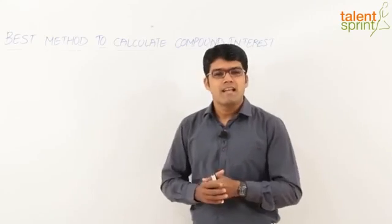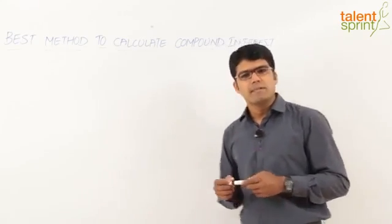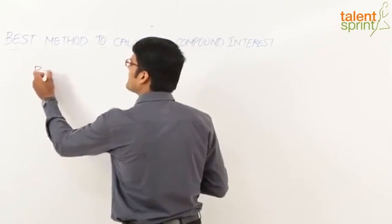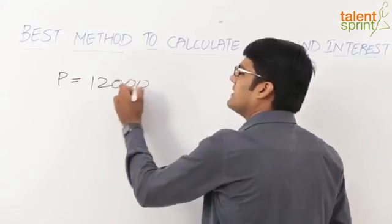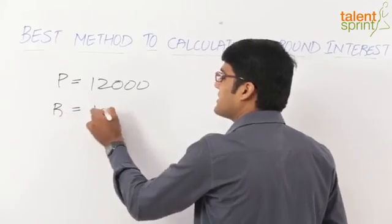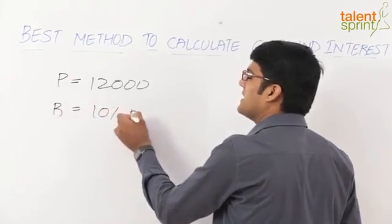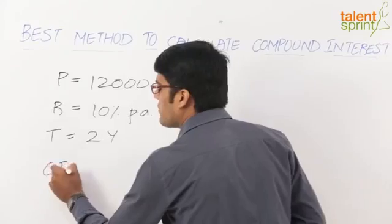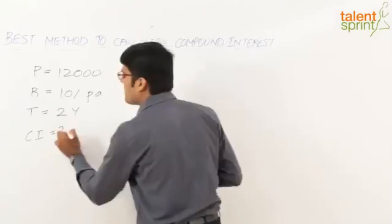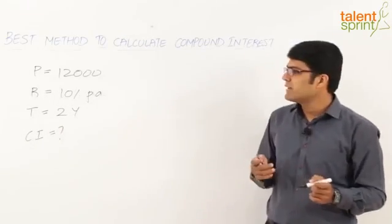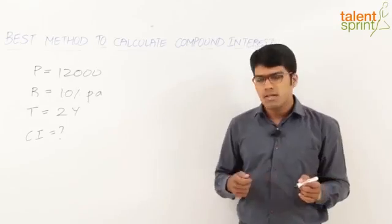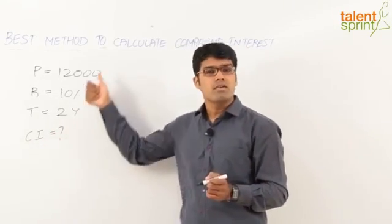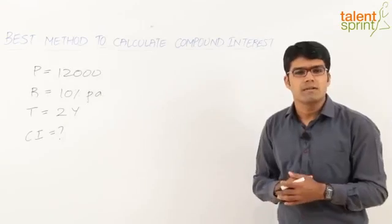Let us understand how to do this with the help of an example. Let us say the principal amount given is 12,000, the rate of interest is 10% per annum, and the time period is 2 years. We are required to find the compound interest — so the principal, rate of interest, and time period are given.